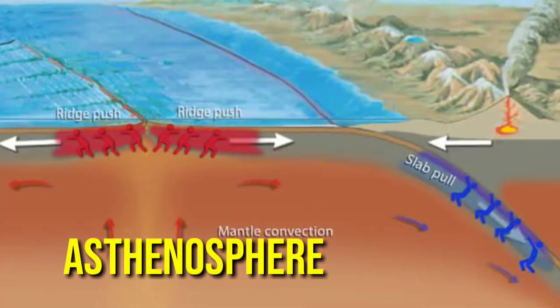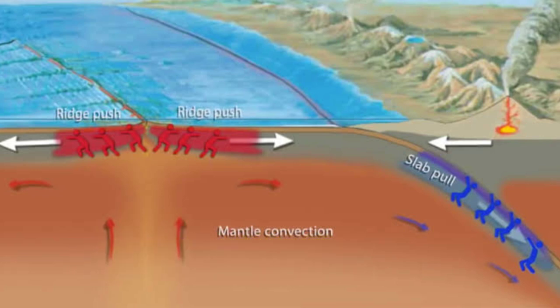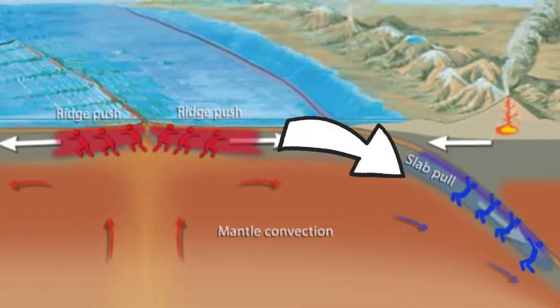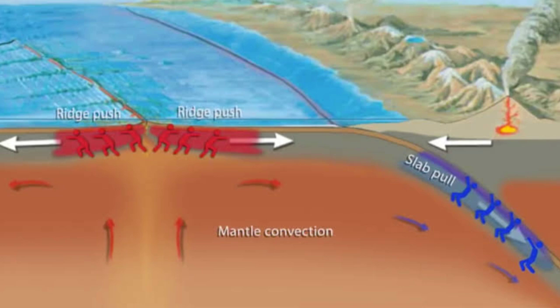The asthenosphere is a zone of soft plastic material which is less dense than the overriding plate above it. It acts as a massive shear zone for the overriding plate. The plate will effectively slide down the slope of the asthenosphere due to the weight difference between the plate at its spreading center and the subduction zone. Since the plate gets thicker and denser the farther away from the spreading center, the ridge push force will increase towards the subduction zone.